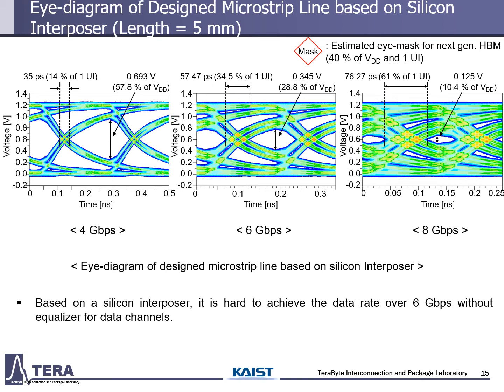This is the eye diagram of the silicon interposer channel. When the silicon interposer channel is used, the eye diagram is closed over 6 Gbps data rate. Due to the lossy characteristics of silicon, it is hard to achieve a data rate over 6 Gbps without equalizers for the silicon channel.